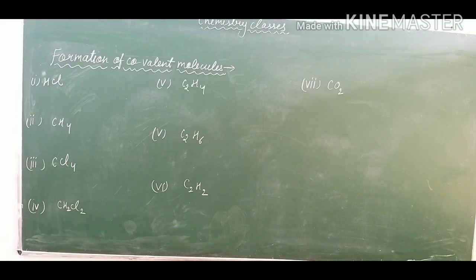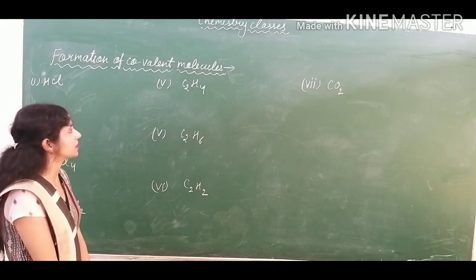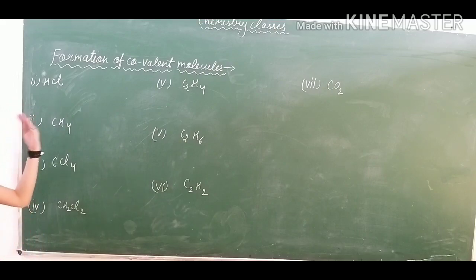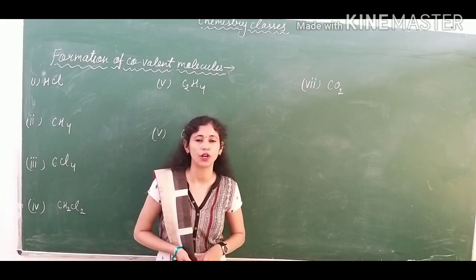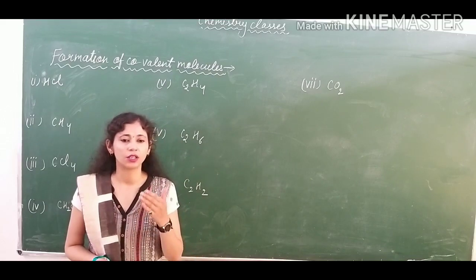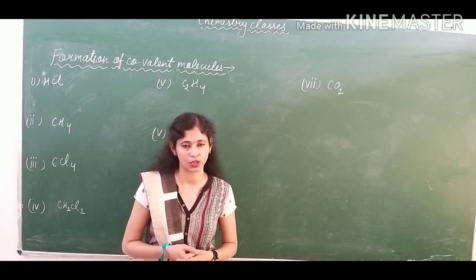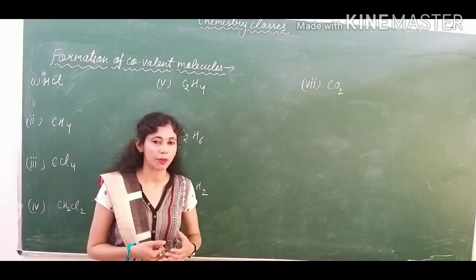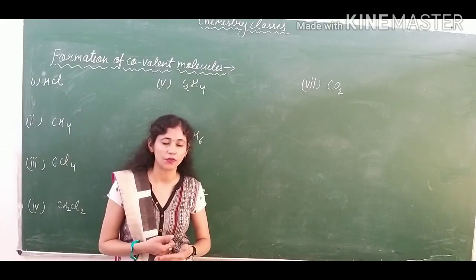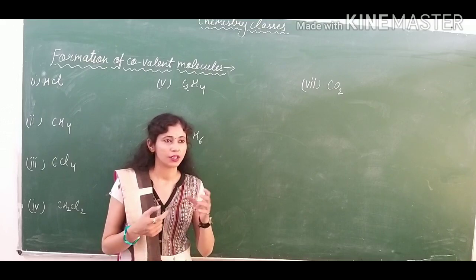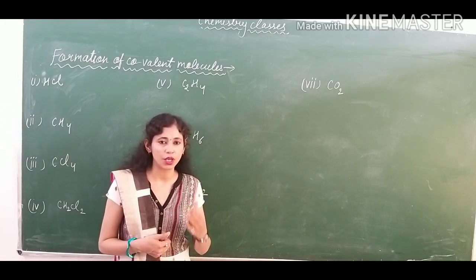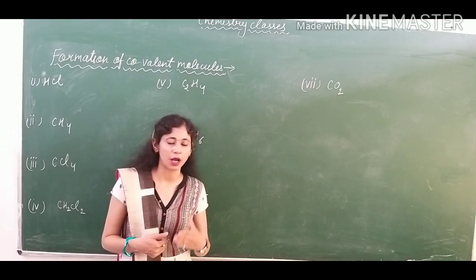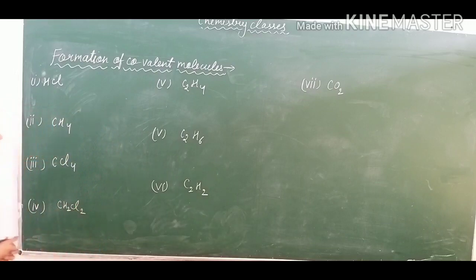Hello everyone. I hope you all are fine, safe and healthy at home. So let's start our today's session. In our today's session, I have taught the study of formation of covalently bonded molecules. As you all know, in our previous session I explained how covalently bonded molecules form, and I discussed the formation of two covalently bonded molecules in the last session. We still have to practice some more molecules and the formation of these covalently bonded molecules — the sharing of electrons. Today I have covered seven molecules and I will tell you how they share their electrons and in what way double bond, single bond, and triple bond will form. So let's start one by one.